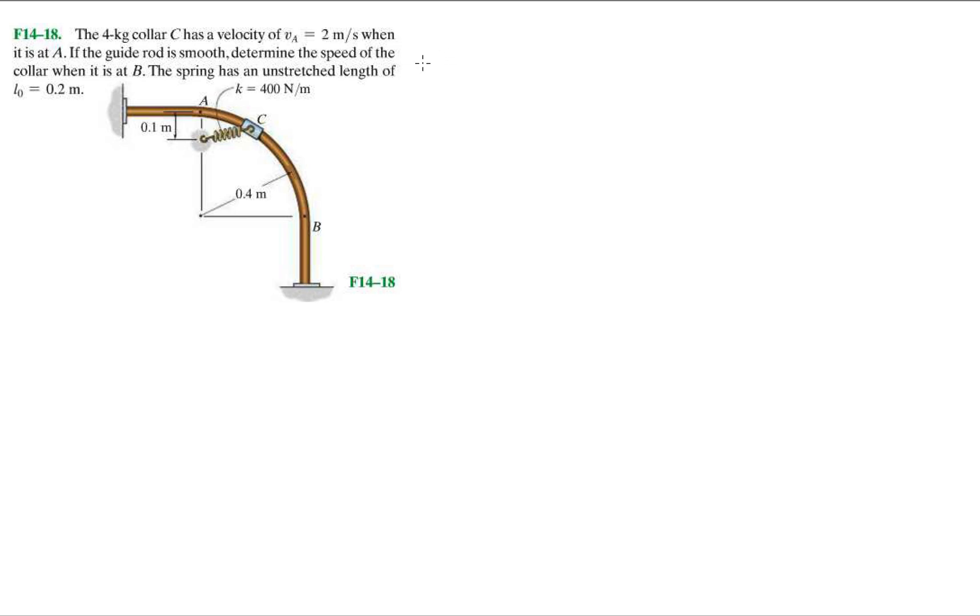We're doing conservation of energy here. We have a 4 kg collar C with a velocity of 2 m per second at point A. The guide rod is smooth, so no friction. Determine the speed of the collar when it is at B. The spring has an unstretched length of L0 equals 0.2. First thing I want you to do is determine where you want to put your zero potential line. If you put it here, that's going to work just great. I'm going to say that this is equal to 0.